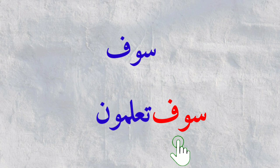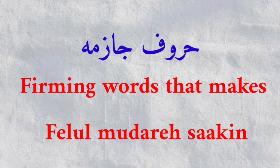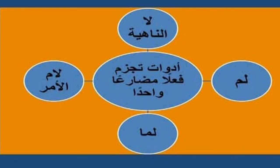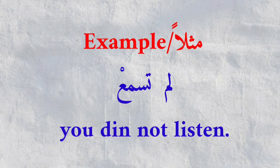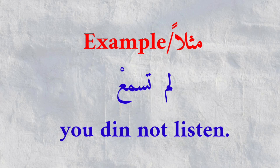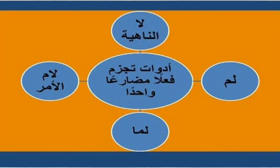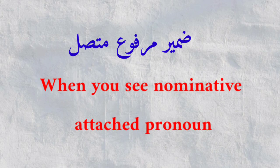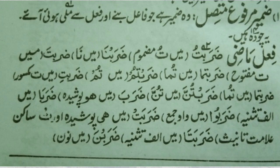You will also see huruf al-jazm before a word, and these make fi'l mudhara' sakin. They are: lam, lamma, lam al-amr, la al-nahi, and conditional particles. For example, lam tasma' — 'you did not listen.' So huruf al-jazm is a symbol of fi'l. Whenever you see a harf jazm before any word, recognize it as a fi'l. Next, when you see a zamir marfu' muttasil — a nominative attached pronoun — at the end of any word, mark it as a fi'l; for example, daraba-tu.